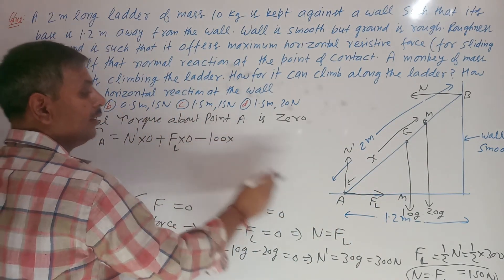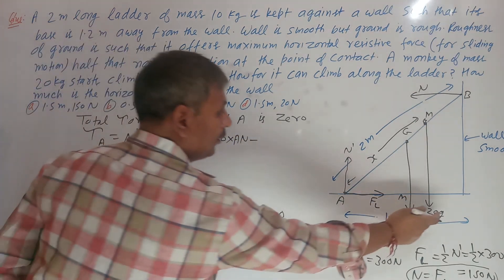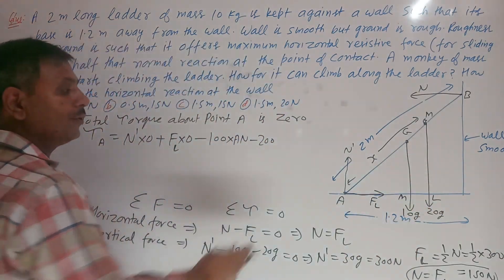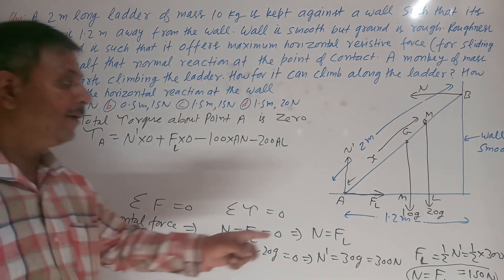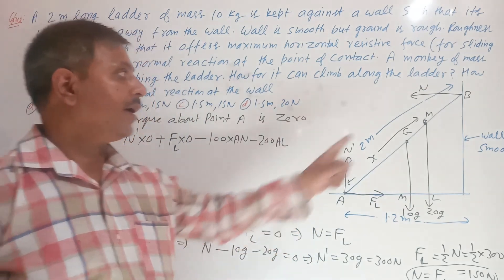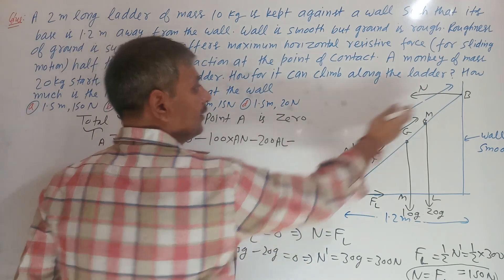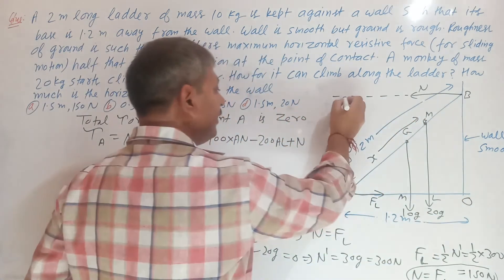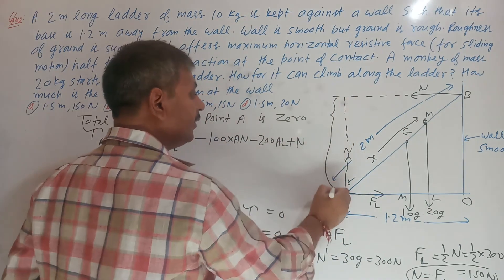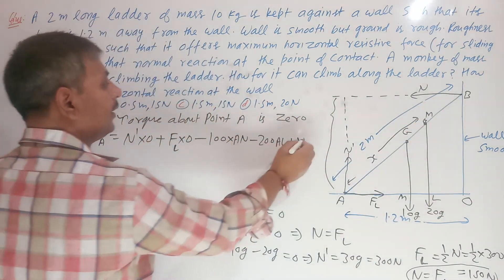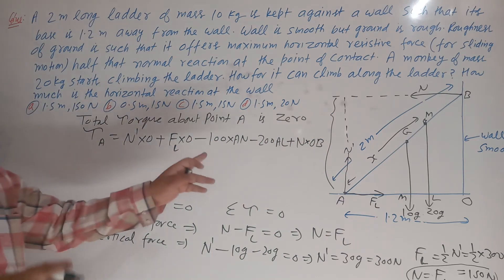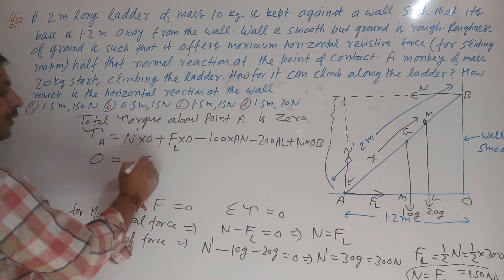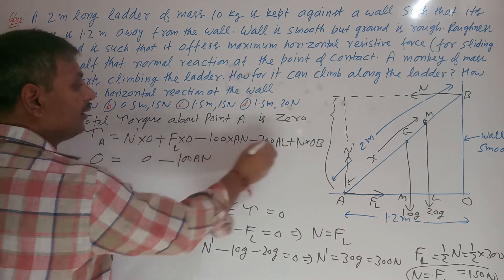So we have: minus 100 times AM minus 200 times AL plus N times OB equals zero. The force 20G (200 N) also acts clockwise with perpendicular distance AL. The normal reaction N acts anticlockwise, taken as positive, with perpendicular distance OB. So the torque equation is: minus 100·AM minus 200·AL plus 150·OB equals zero.